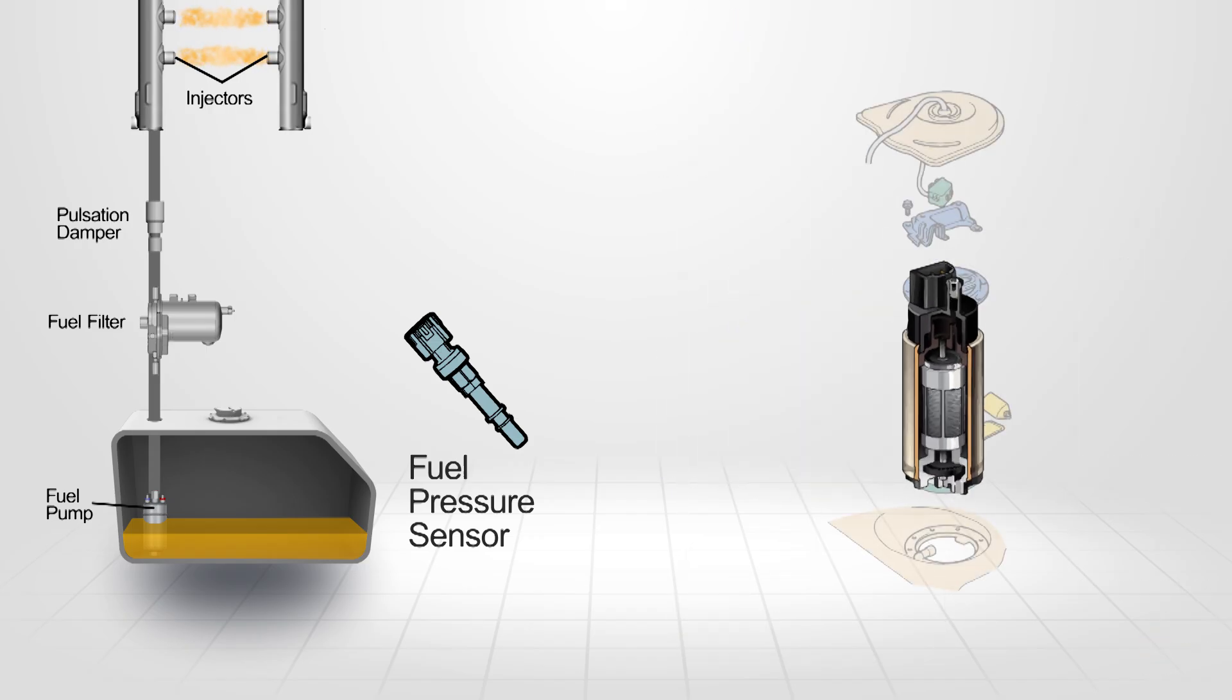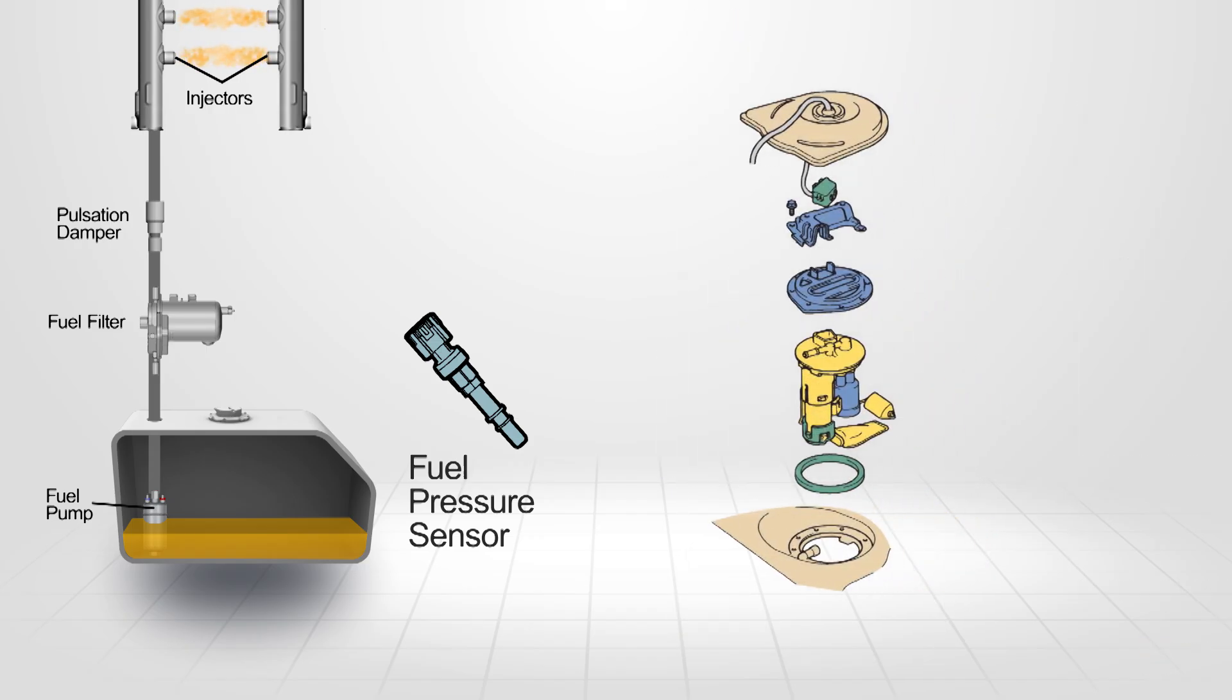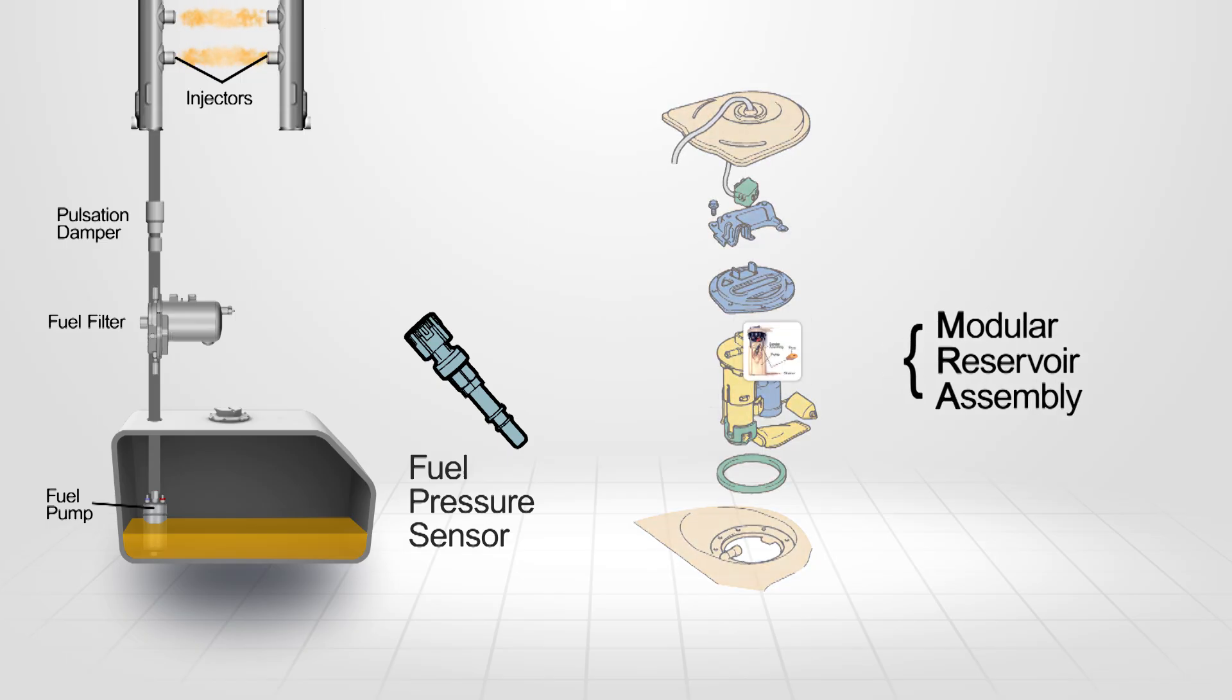The fuel pump is mounted in the fuel tank module reservoir assembly, or MRA. The fuel pump delivers a constant flow of fuel, regardless of fuel level or aggressive vehicle manoeuvres.